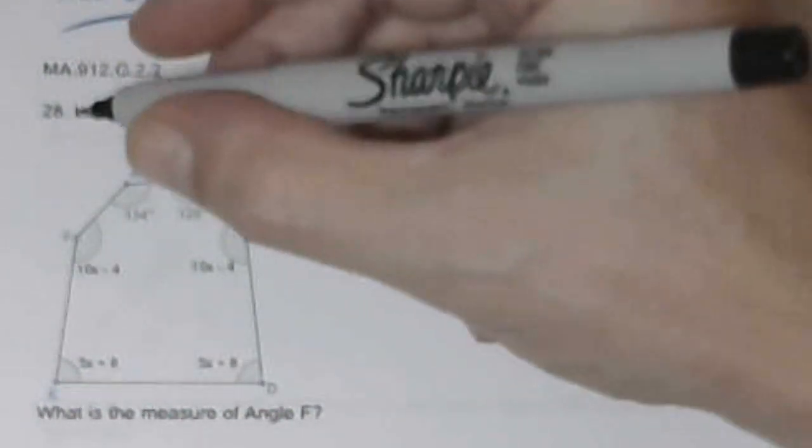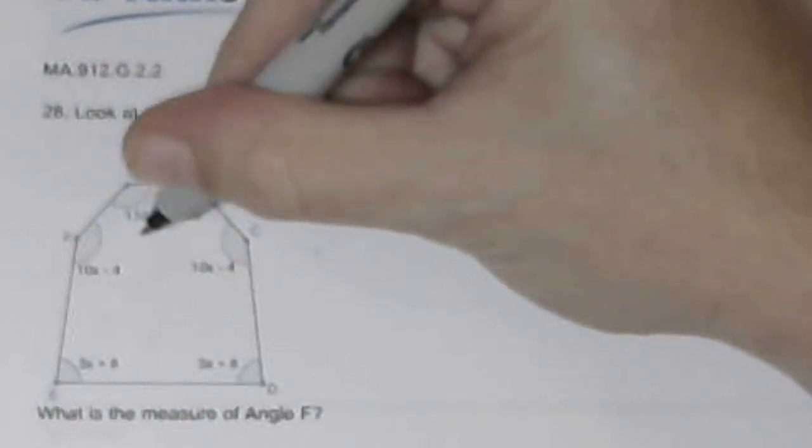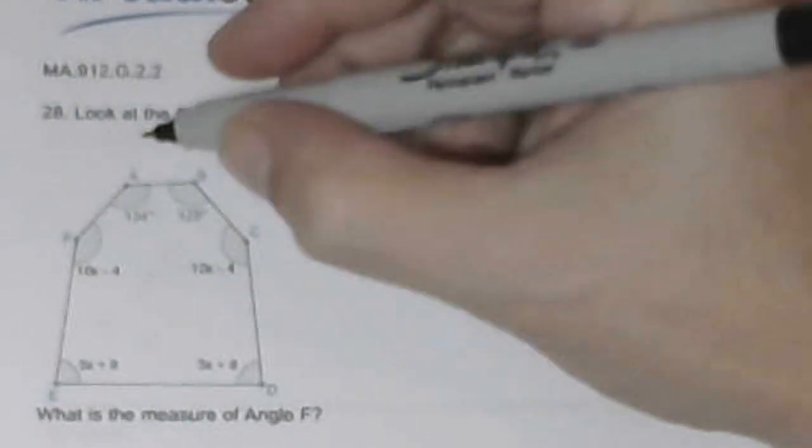It wants angle F. It doesn't help me to set these two equal to each other. Even if this were symmetric, which it doesn't look to be. But I'm going to use something from the previous. N minus 2 times 180. It doesn't have to be a regular figure.